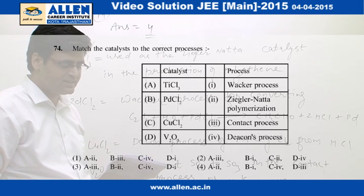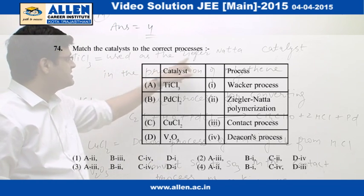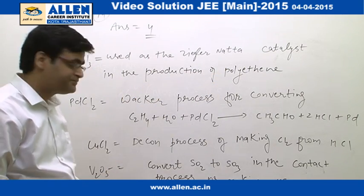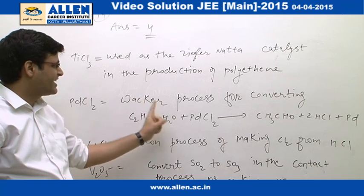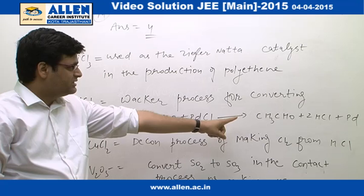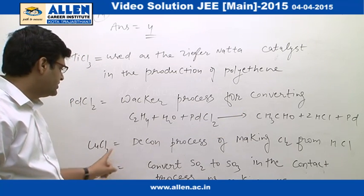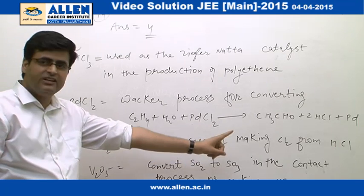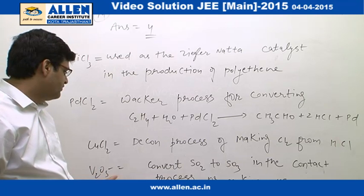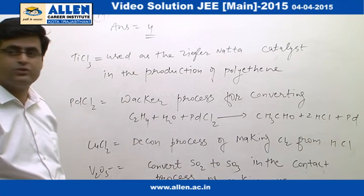Question No. 74: Match the catalyst to the correct process. TiCl₃ is used as the Ziegler-Natta catalyst in the production of polyethylene. PdCl₂ is used in the Wacker process for converting C₂H₄ + H₂O + PdCl₂ → CH₃CHO + 2HCl + Pd. CuCl₂ is used in the Deacon process for making Cl₂ from HCl with O₂. V₂O₅ converts SO₂ to SO₃ in the Contact process for making H₂SO₄.